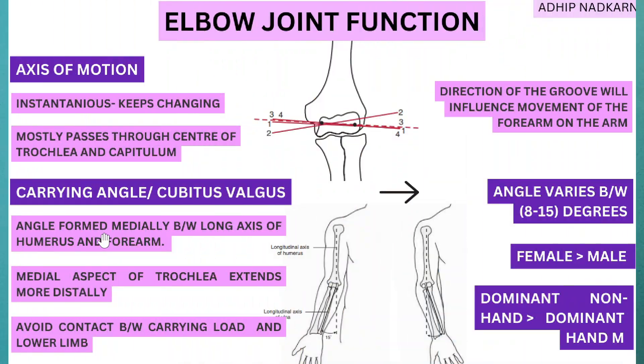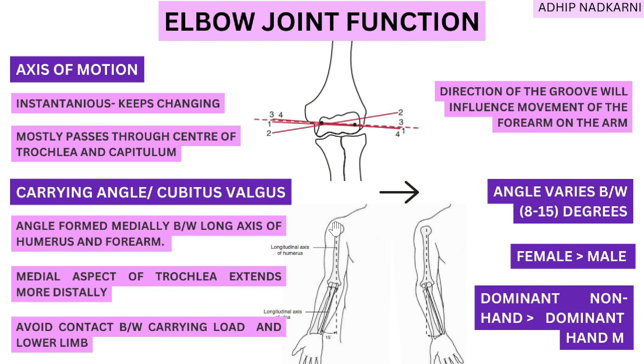The carrying angle works best and is most clearly seen when your forearm is supinated, the elbow is extended, and the shoulder is laterally or externally rotated. So, under elbow joint function we have the carrying angle formed by the axis between the humerus and forearm, and under motion we have the instantaneous axis and the joint articulation surfaces influencing movement.